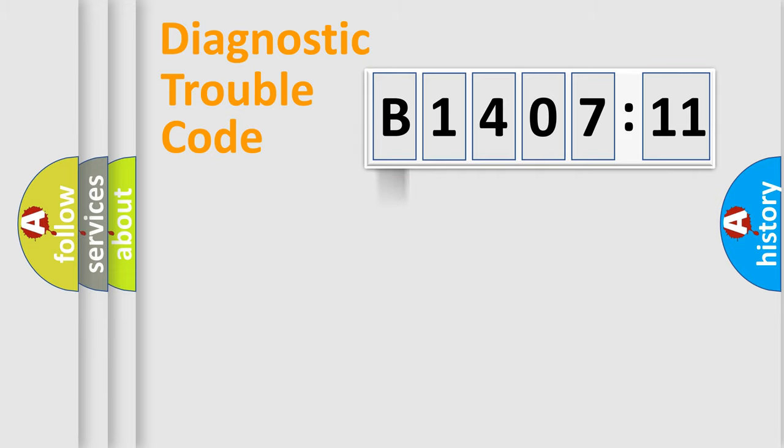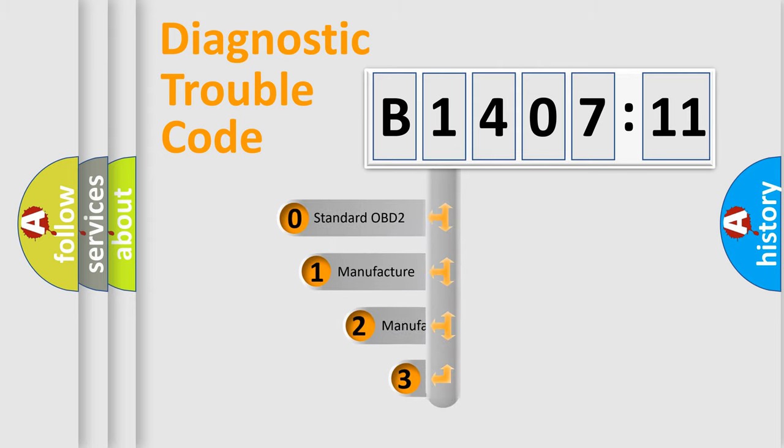Powertrain, Body, Chassis, Network. This distribution is defined in the first character code.